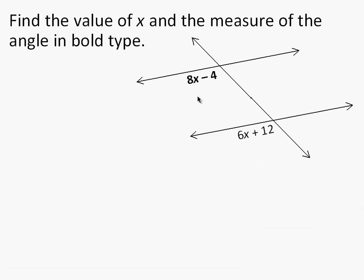Find the value of x and the measure of the angle that is marked in bold type. I find the angle that is marked in bold type — that is the 8x minus 4. What are the other angles that have the same measure as it? There is this one that is vertical to it, and then we come down here, just like sliding that top parallel line down on top. So the two angles have to have the same measure, and I set their expressions equal to each other.